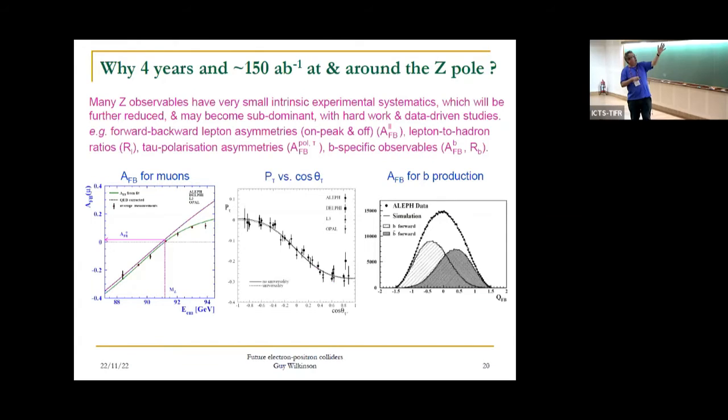If you turn to other observables where experimental systematics are much more tractable - for instance, forward-backward asymmetry for muons, tau polarization, forward-backward asymmetry for B production - all very important observables. Here, the hope is you could really extract the full power from the statistics you get from these four years.